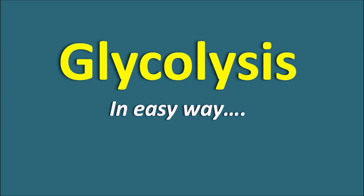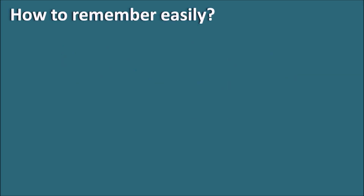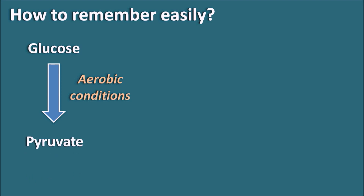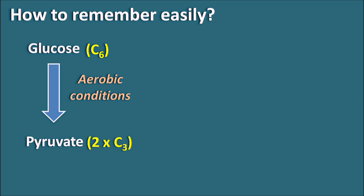Today let us discuss glycolysis in an easy way — how to remember it logically. Glycolysis is a pathway where glucose, under aerobic conditions, is converted into pyruvate. Glucose is a C6 molecule and pyruvate is a C3 molecule, so one molecule of glucose produces two molecules of pyruvate.